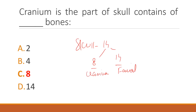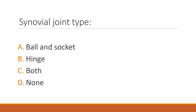Regarding partial points and joint types, the correct answer is option C: both ball-and-socket as well as hinge joint.